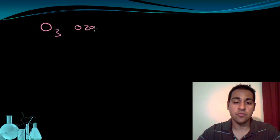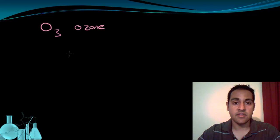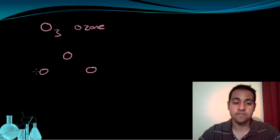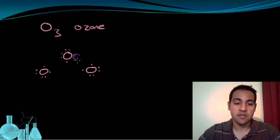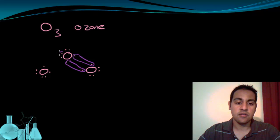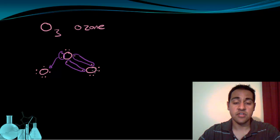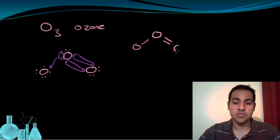O3 is the ozone molecule. When we draw the structure for ozone, we have three oxygens, and we know each oxygen has six valence electrons. Now we want to see what bonds they form, so we're going to start making octets. We can start by sharing electrons between them, contributing this way. After sharing the electrons like this, each oxygen has eight valence electrons. Let's clean up this drawing a little bit.